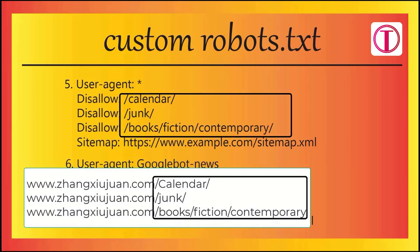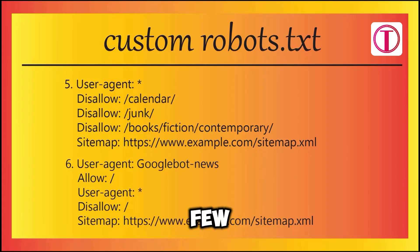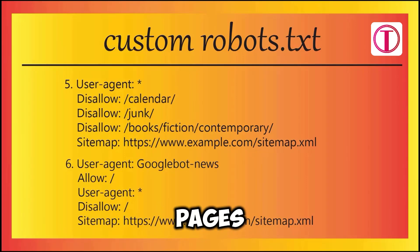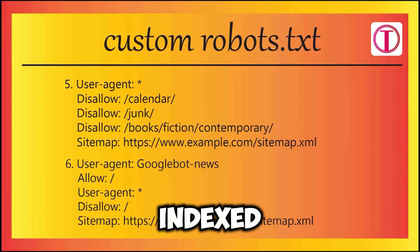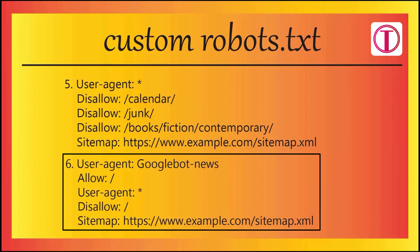For example five, 'Disallow: /calendar' and 'Disallow: /junk' can be the rest of the URL without the domain name. In this case, you are not allowing a few specific pages or posts of your website to be indexed, while allowing all other pages or posts to be indexed.